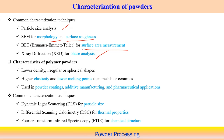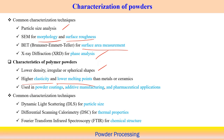Characteristics of polymer powders: low density, very irregular or sometimes spherical shape, very high elasticity, and low melting point compared to metals and ceramics. Polymer powders can be used in powder coatings, additive manufacturing, and even pharmaceutical applications.